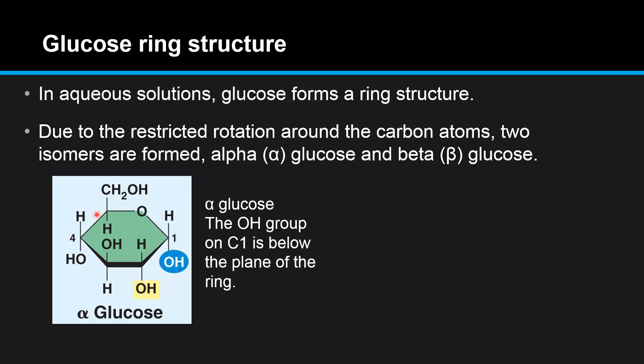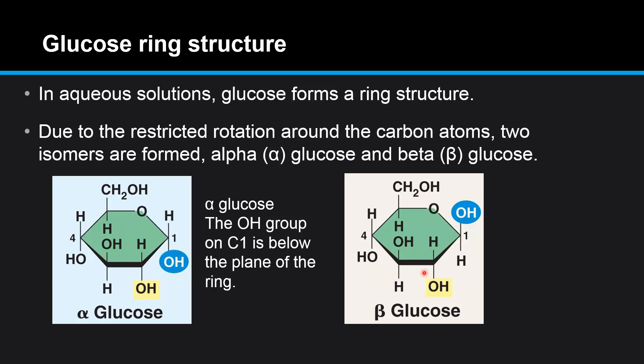We'll start with the structure of alpha-glucose. The OH group on carbon 1, this is carbon number 1 here, the OH group here is below the plane of the ring. Comparing that to beta-glucose, where on carbon 1, the OH group is above the plane of the ring. That's the difference between alpha-glucose and beta-glucose.